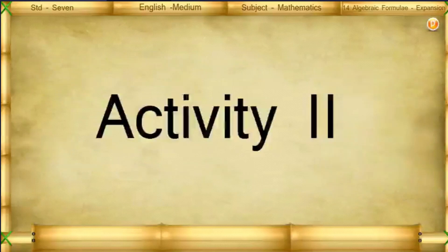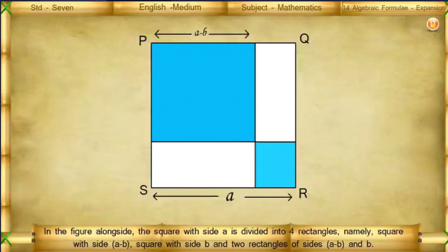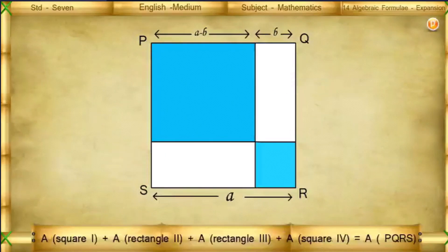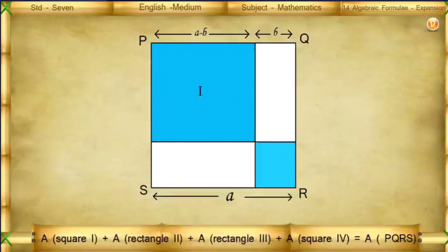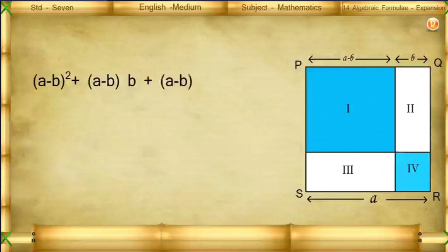Activity 2: In the figure, a square with side a is divided into four rectangles — a square with side (a − b), a square with side b, and two rectangles of sides (a − b) and b. Area of square 1 + area of rectangle 2 + area of rectangle 3 + area of square 4 = area of PQRS. So, (a − b)² + (a − b)·b + (a − b)·b + b² = a².